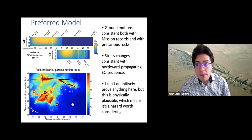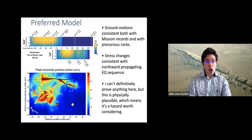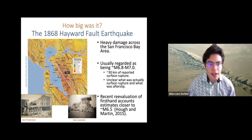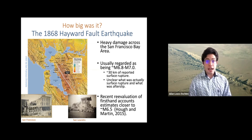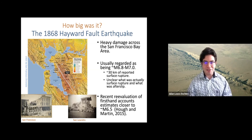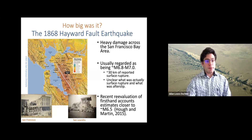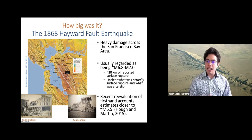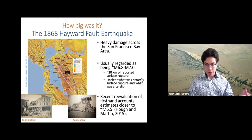Now I'm going to switch gears to talk about the 'how big was it' question, looking briefly at the 1868 Hayward fault earthquake. This was known as the Great San Francisco earthquake up until the 1906 earthquake. It caused heavy damage across the Bay Area, destroying buildings in San Francisco and the East Bay. It's very widely felt and very damaging. It's typically interpreted as a 6.8 to 7.0, usually based on the strength of the shaking but also based on surface rupture.